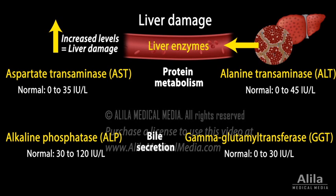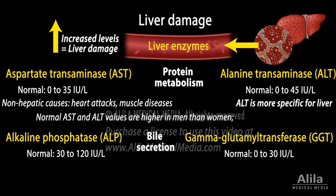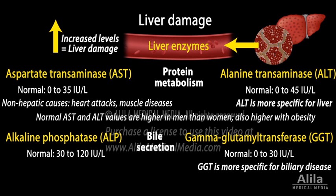Between ALT and AST, ALT is more sensitive and specific for liver damage. Both AST and ALT normal values are higher in men than in women, and their normal range is also higher in obesity. Between GGT and ALP, GGT is more specific for biliary disease.